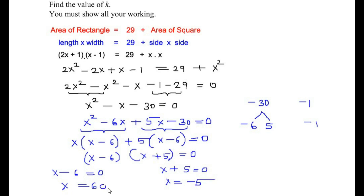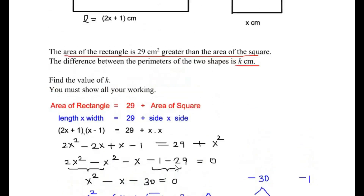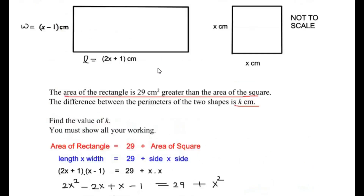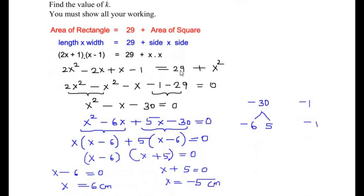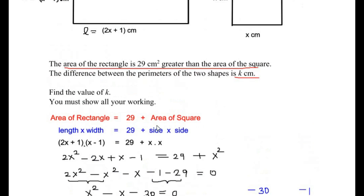Both values are in centimetres. Since x represents the side of a shape, the sides cannot be negative. We discard x equals negative 5 and take x equals 6 cm as the only valid value. Now let us find the value of k.